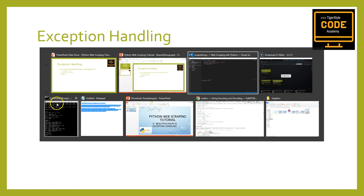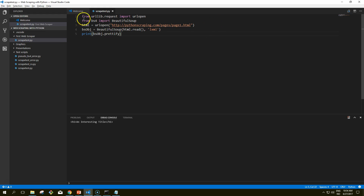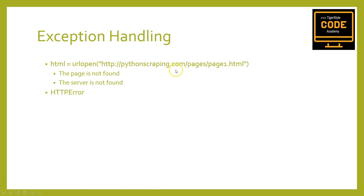Let's look at the first line after the imports and figure out how to handle any exceptions it might throw. There are two main things that can go wrong: the page is not found on the server, or the server is not found at all. In the first situation, an HTTP error will be returned — this may be 404 page not found, or 500 internal server error, etc. In all of these cases, the URLopen function will throw the generic HTTPError exception.